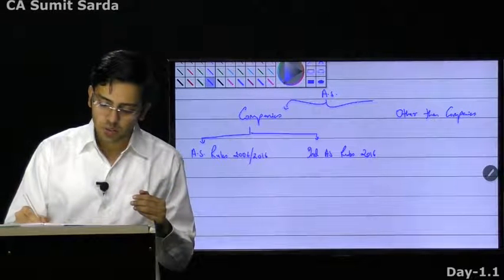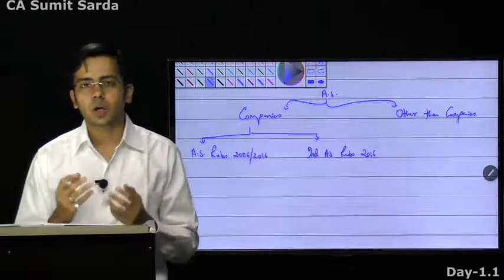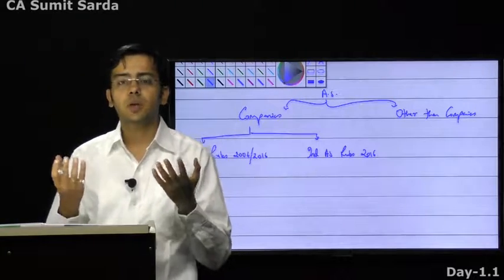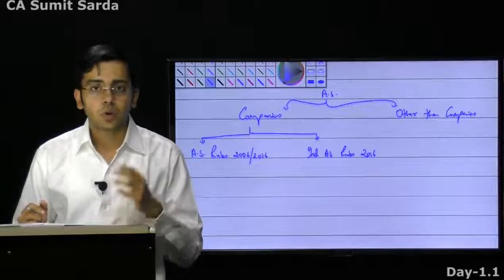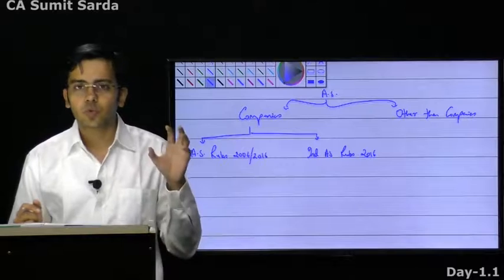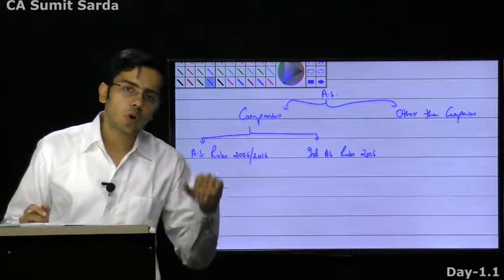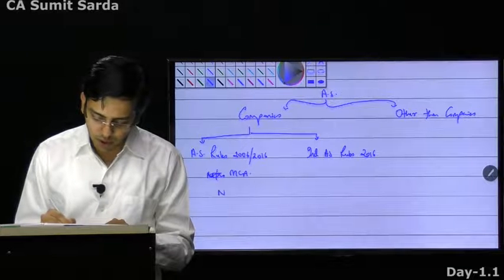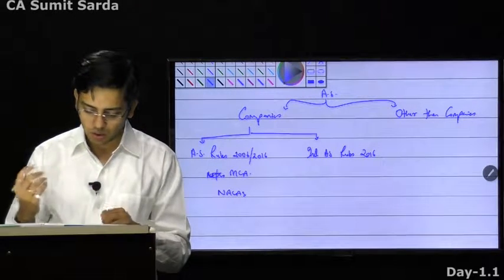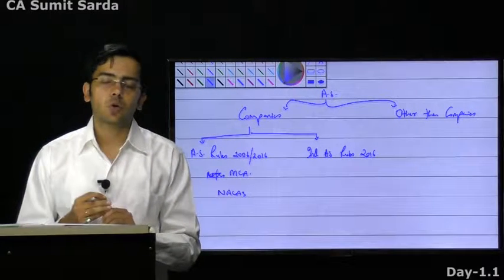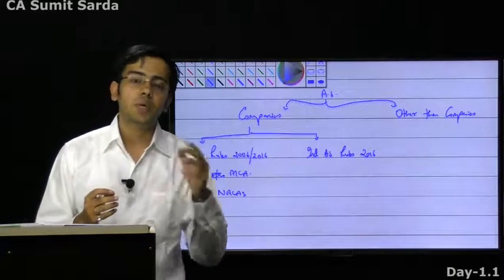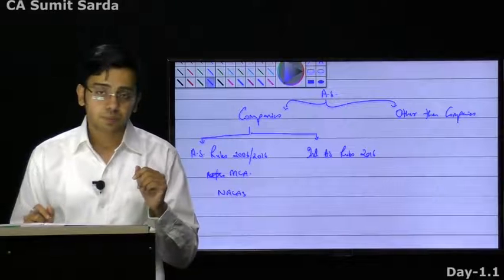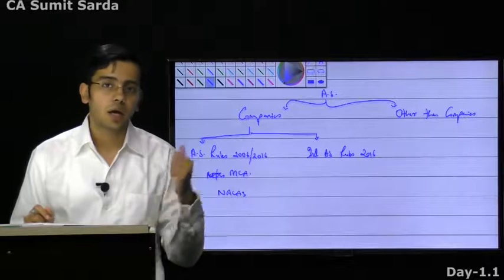Why are we splitting this? ICAI is the one who is supposed to draft and finalize the accounting standards. But over the period, the government has slowly transferred these rights from ICAI to an independent body for companies under MCA — the Ministry of Corporate Affairs. Ministry of Corporate Affairs has a body named NAKAS, the National Advisory Committee on Accounting Standards, who finalizes accounting standards applicable to companies. These standards are drafted by members of ICAI, but finalization is approved by NAKAS.